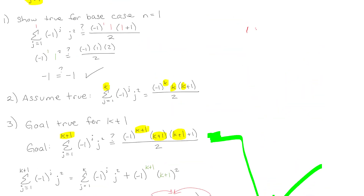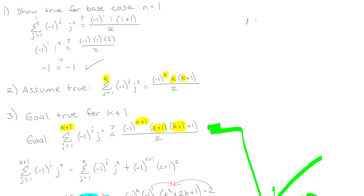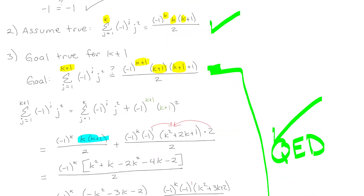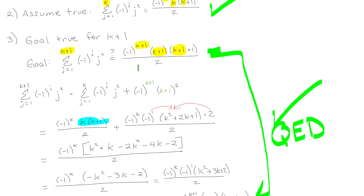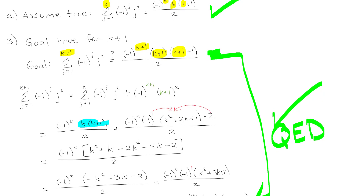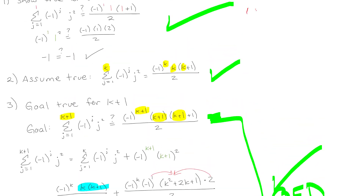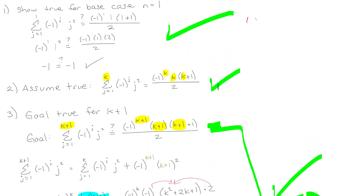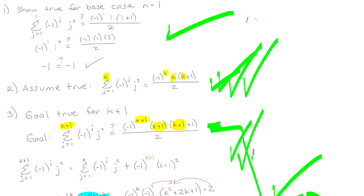To recap: you start by showing something is true for the base case, then assume it's true for some random integer k, and then show it must also be true for k plus 1. Here we showed it's true for n equals 1, then assumed true for k, then showed it for k plus 1. That domino effect — true for 1, so true for 2, so true for 3, so true for 4 — keeps going forever. That's your first example of proof by induction.